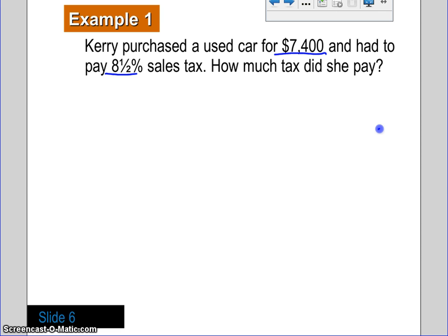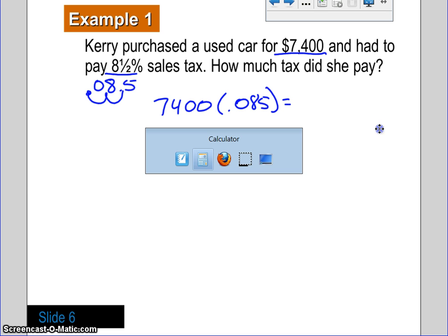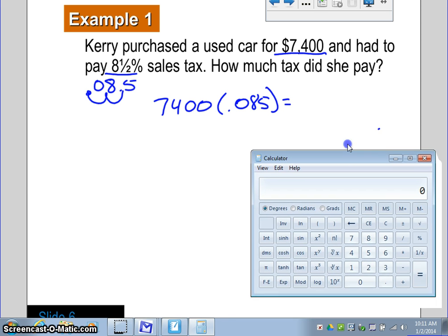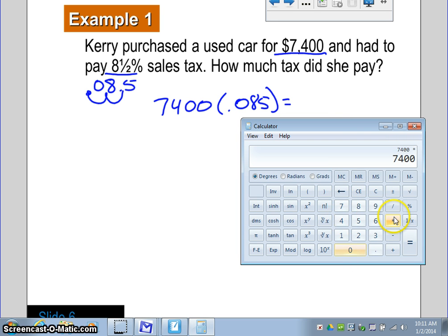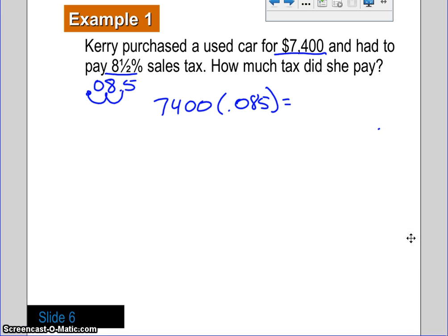Well, what I'm going to do is rewrite my fraction as a decimal. 8.5 is the same as 8.5. And it is a percentage. We need to convert it to a decimal. So, we're going to move that decimal point two times over, and it's going to be $7,400 times .085. And that's going to give us, let's go ahead and pull up our calculator here. And we've got $7,400 times .085. And it looks like we're paying in taxes $629.